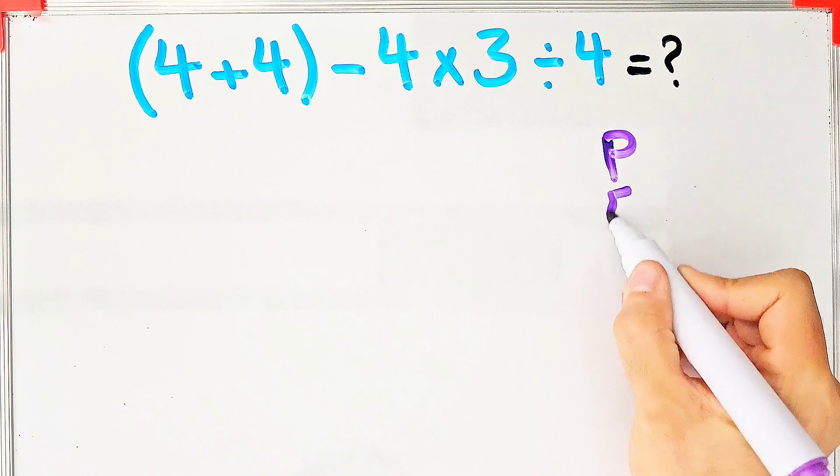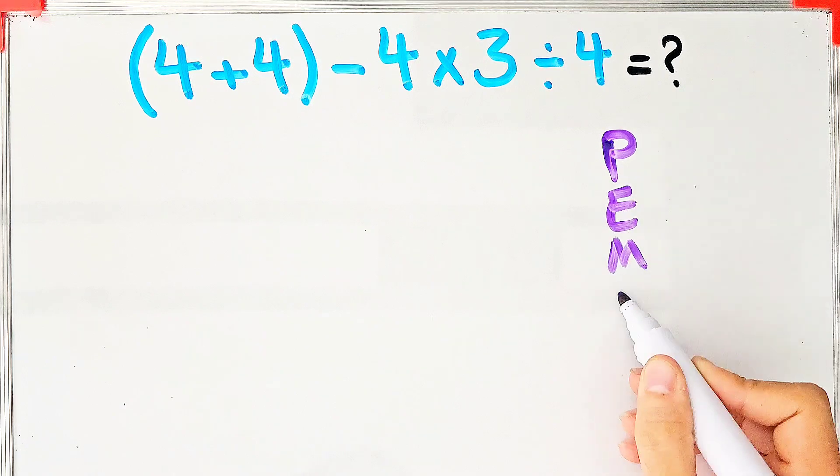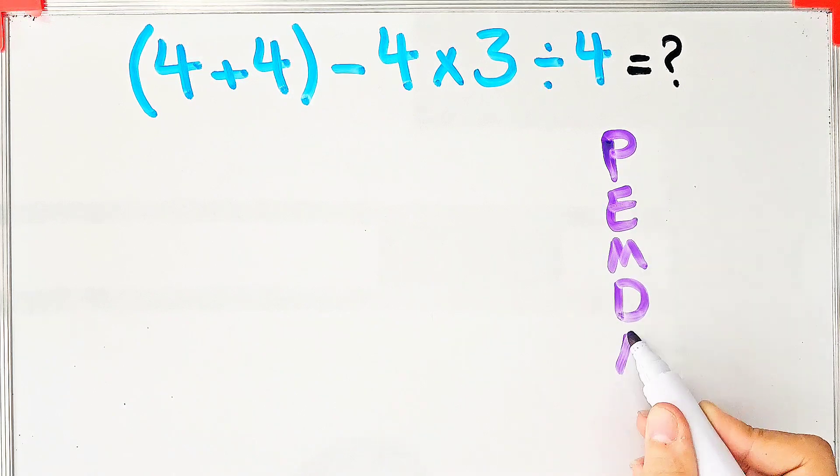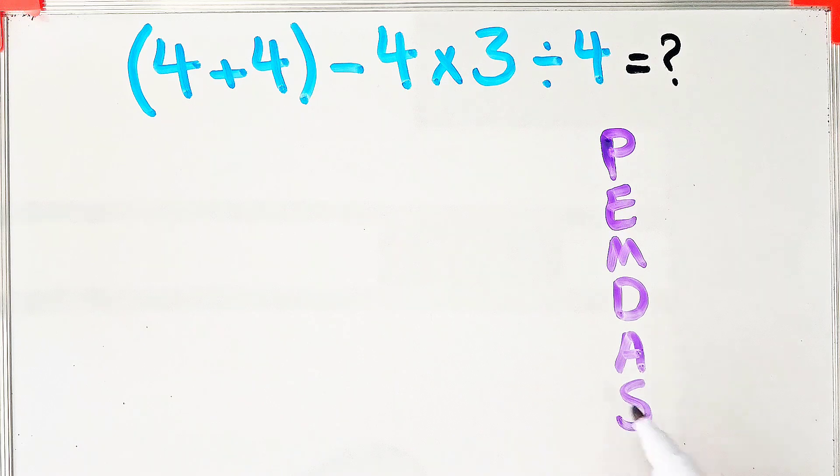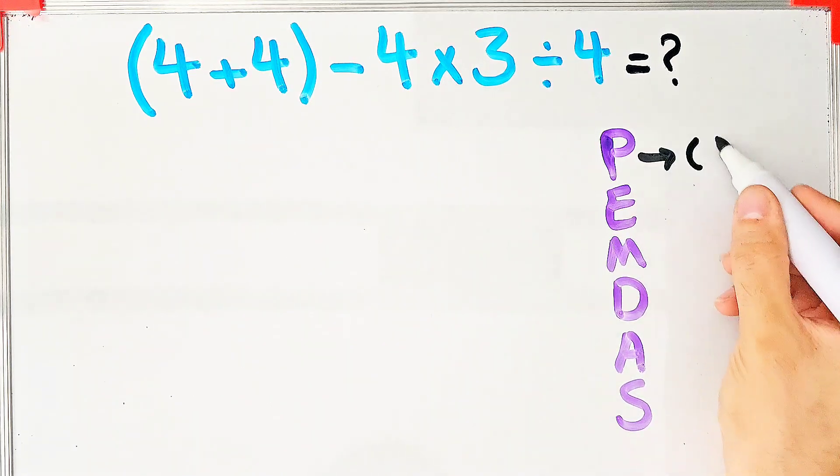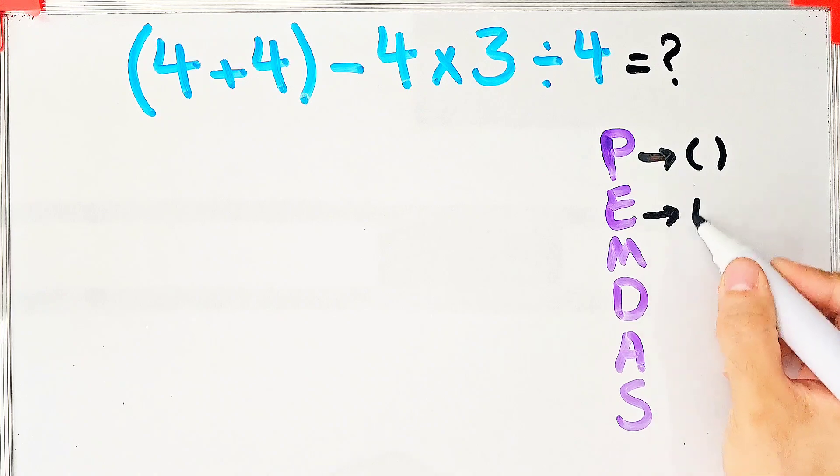We need to follow the PEMDAS rule. PEMDAS shows the priority of the mathematical operations. If you don't pay attention to this rule, you get the wrong answer. In this rule, P stands for parentheses, E stands for exponent, M stands for multiplication, D stands for division, A stands for addition, and S stands for subtraction.